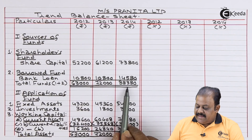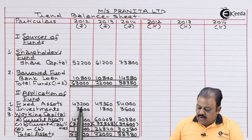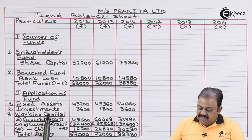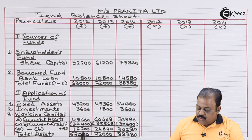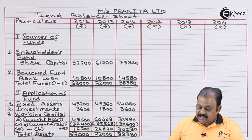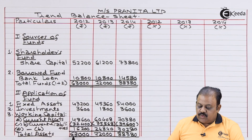Total funds: 63,000 for 2012, 72,000 for 2013, and 88,380 for 2014. Application of funds — fixed assets: 43,200 for 2012, 45,360 for 2013, 54,000 for 2014. Long-term investments: 3,600 for 2012, 1,800 for 2013, 3,600 for 2014. Working capital: 16,200 for 2012, 24,840 for 2013, 30,780 for 2014. Total assets: 63,000, 72,000, and 88,380. Base year 2012 is taken as 100.